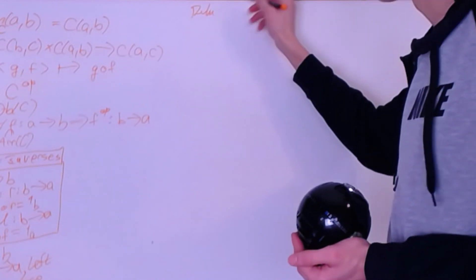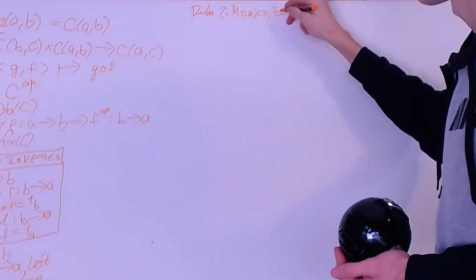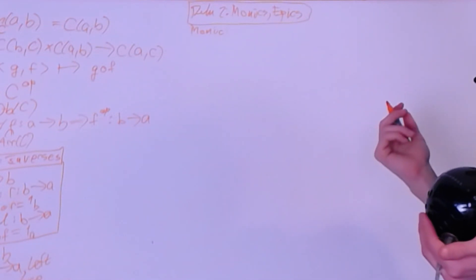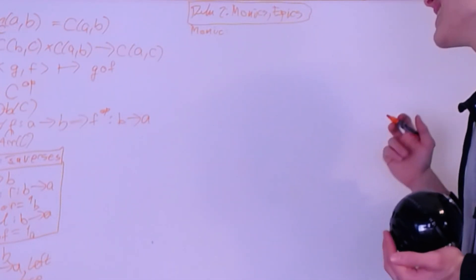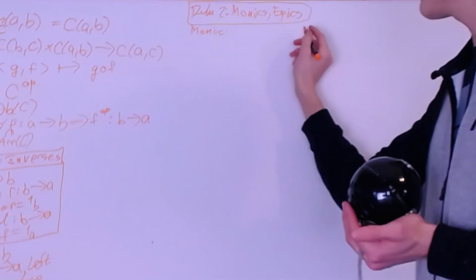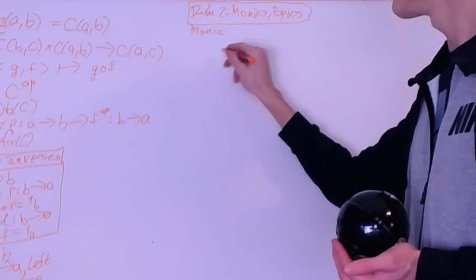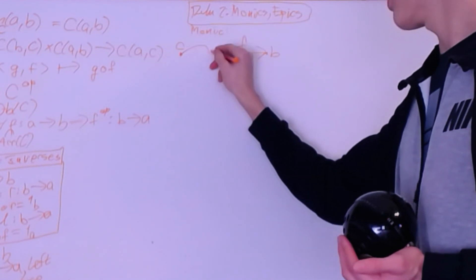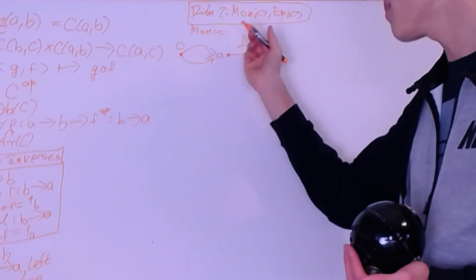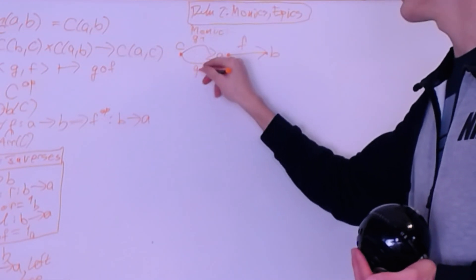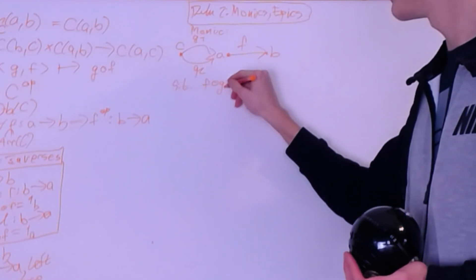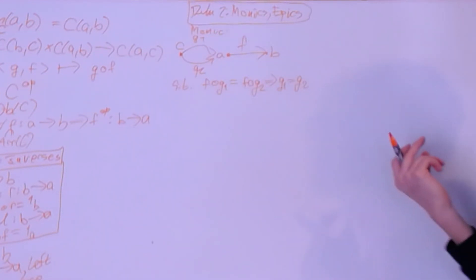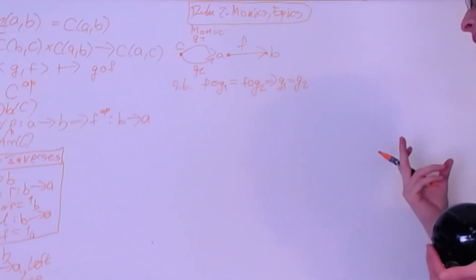A very closely related idea to inverses is monics and epics. A monic is sort of like having a left inverse, but it's not necessarily required — really it is the categorical equivalent of an injective map. If I have an arrow F from A to B and any two arrows G1 and G2 from some object C into A such that F composed G1 equals F composed G2, then we must have G1 equals G2. You can clearly see how this is the categorical equivalent of an injective map.